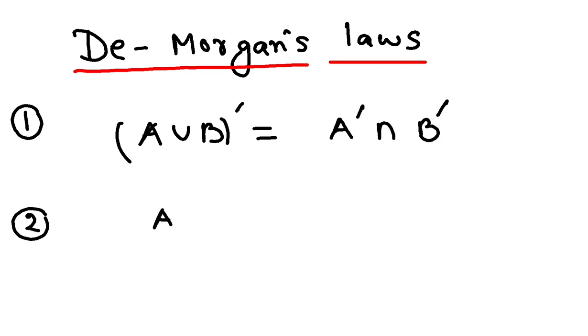A intersection B whole complement is equal to A complement union B complement.